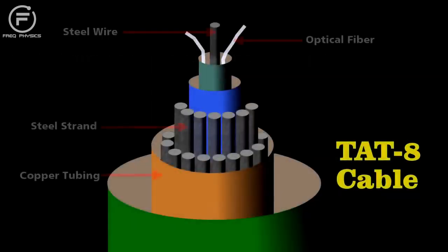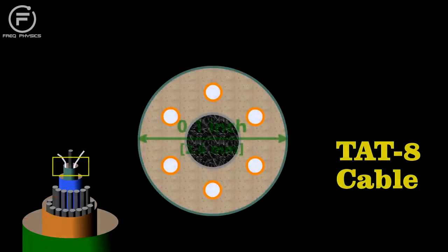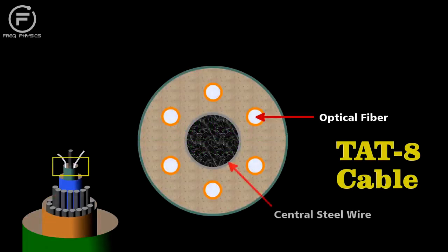Engineers designed the cable carefully to survive on the ocean floor. At its center lies the core. Less than a tenth of an inch in diameter, it contains six optical fibers wrapped around a central steel wire.